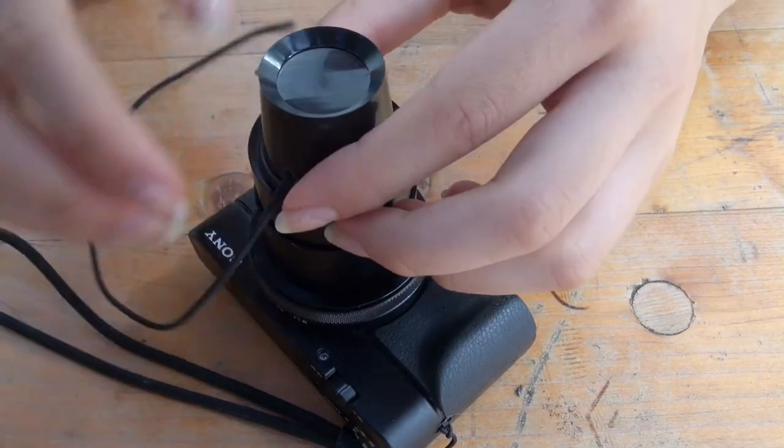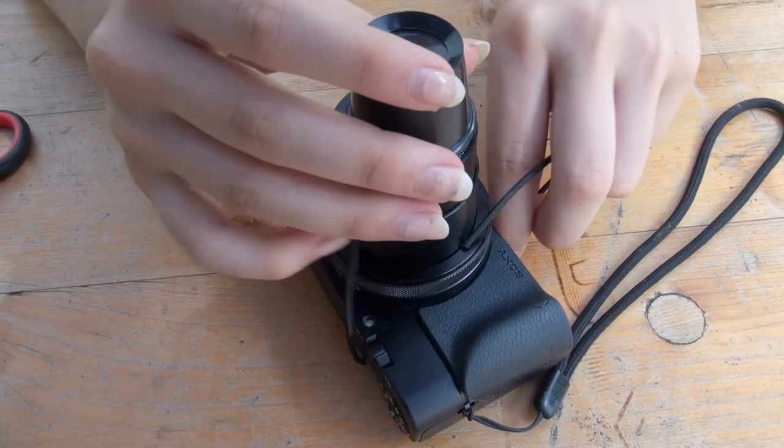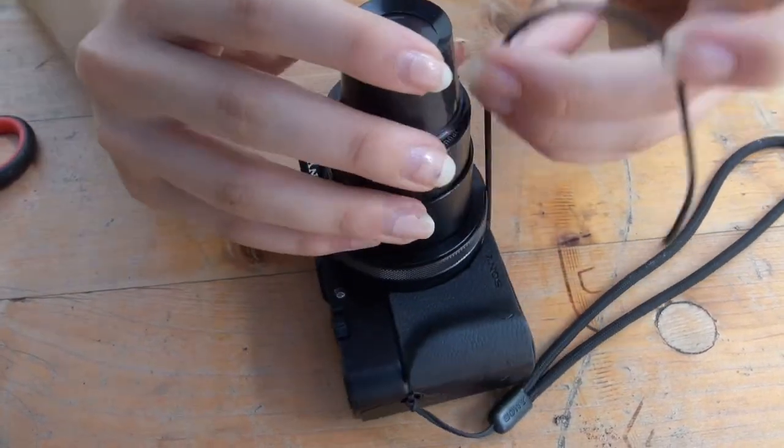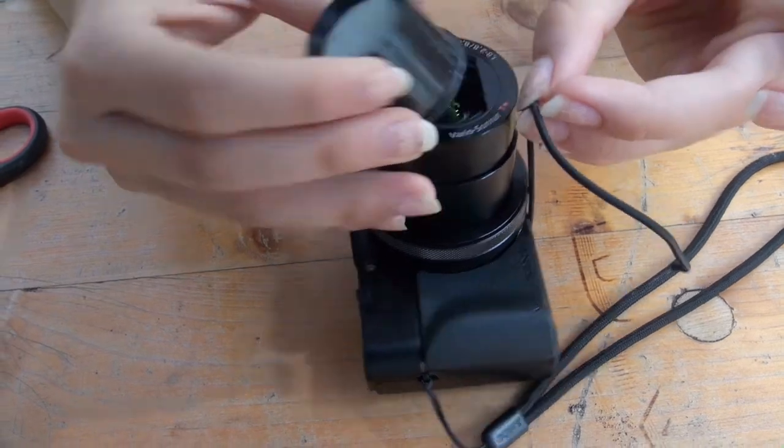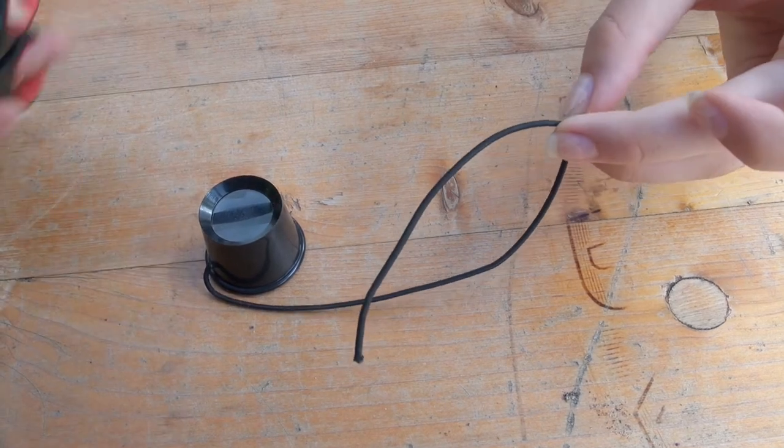Take your camera and check the length of rubber band needed. Then cut it there.